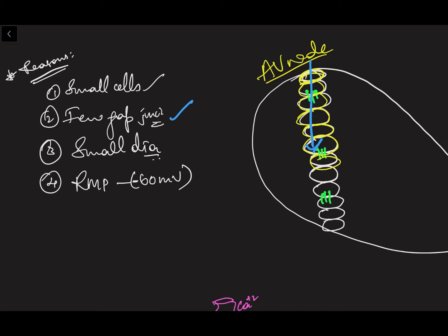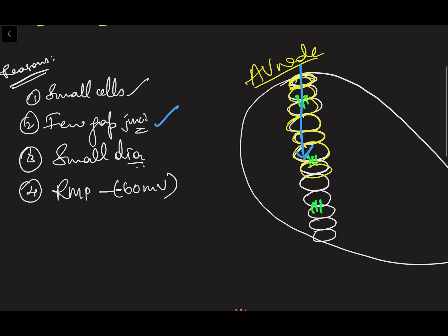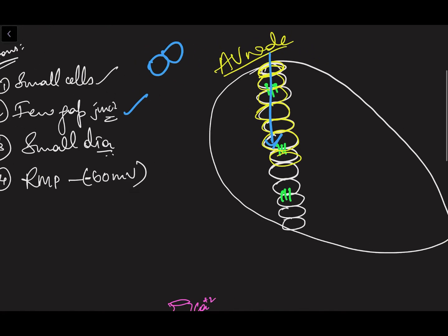The second reason is fewer gap junctions. Gap junctions are cell junctions between two cells that help with faster conduction of current. The myocardium — all the other cells in the heart — has a lot of gap junctions, so there is faster conduction there. But in the AV node, as shown by the green markings in this diagram, the gap junctions are much less, so the speed of current is reduced.